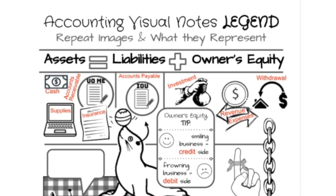A tip on owner's equity: anytime the business is smiling, it will be on the credit side. Anytime the business is frowning, it will be on the debit side. If you don't know what debits and credits are yet, no big deal — we'll get to that. The business would be smiling for an investment and for revenue, and frowning for expenses and withdrawals.